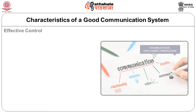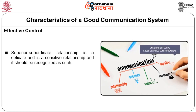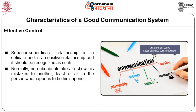The third characteristic is effective control. A superior-subordinate relationship is a delicate and sensitive relationship and should be recognized as such. Normally no subordinate likes to show his mistakes to another, least of all to the person who appears to be his superior.